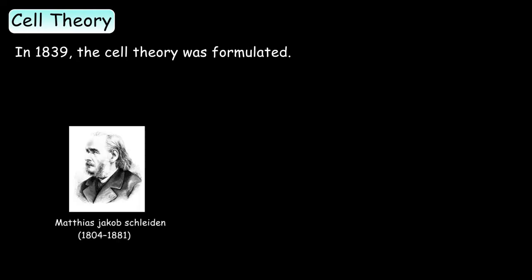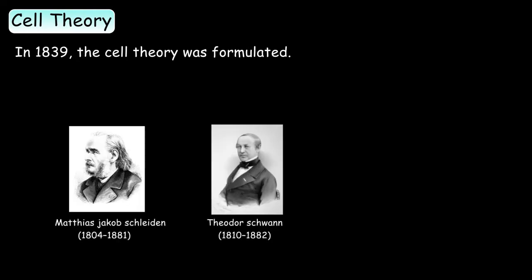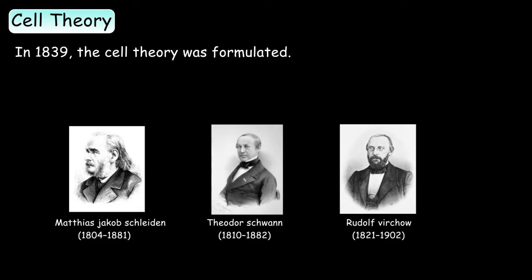In 1839, the cell theory was formulated, which is mainly credited to Matthias Schleiden, Theodor Schwann, and Rudolf Virchow. Now, we will learn about the cell theory.